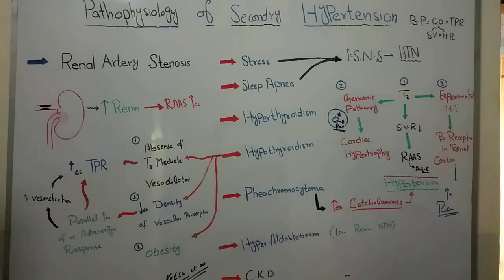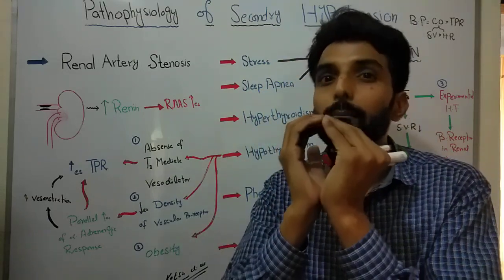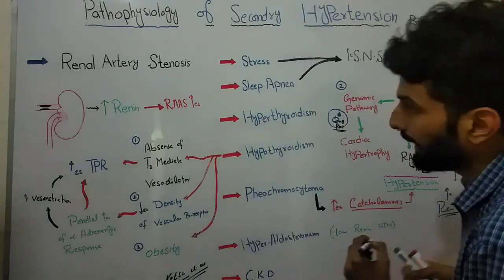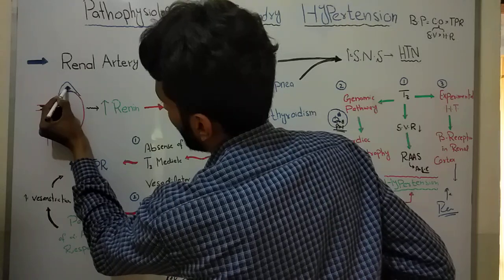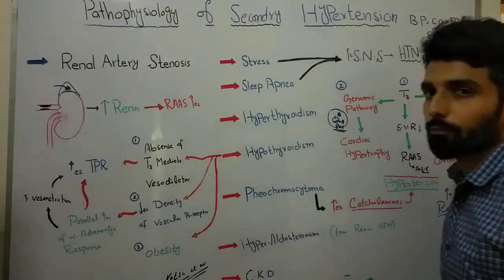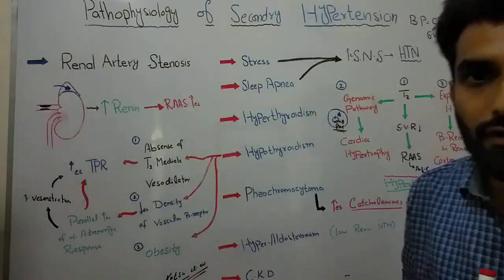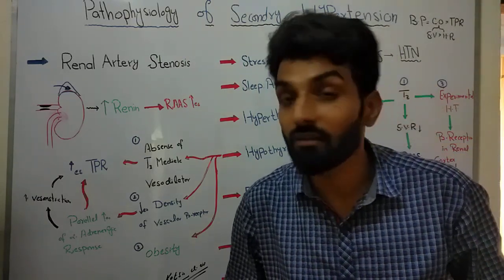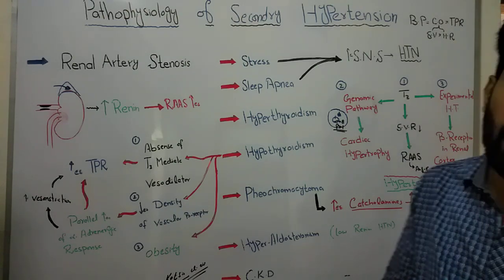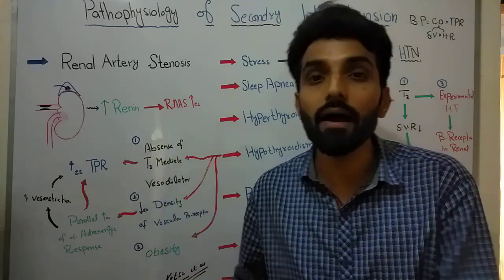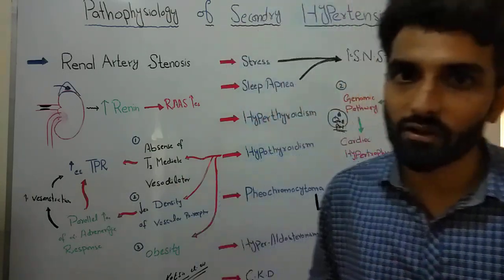Now let's talk about pheochromocytoma. This is basically cancer of the adrenal medulla. The adrenal gland is present above the kidney, and in the center of the adrenal gland is the adrenal medulla, which is responsible for production of catecholamines — epinephrine and norepinephrine. If there is cancer in the adrenal medulla, the production of epinephrine and norepinephrine will increase, ultimately leading to hypertension by increasing TPR through alpha receptors and increasing cardiac output through beta receptors on the heart.